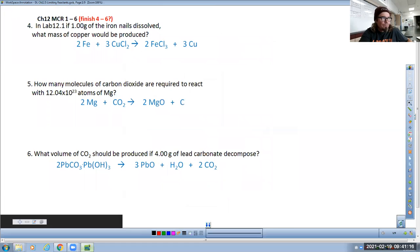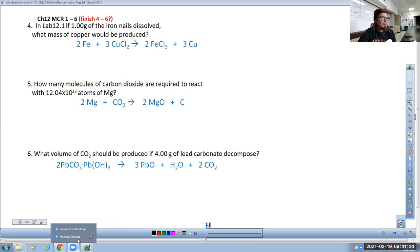All right, so this is what we were finishing up in class together, questions four through six. Number four, how about instead of number one, we only have one gram of iron nails dissolved, what mass of copper would be produced. Feels like a math problem, feels like we should do a conversion table.